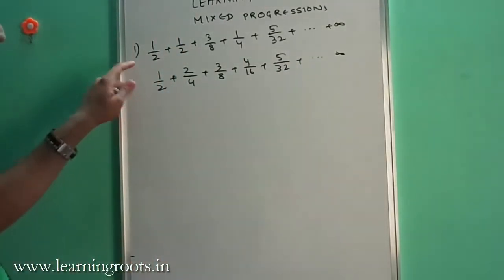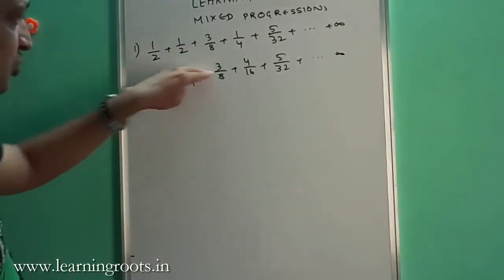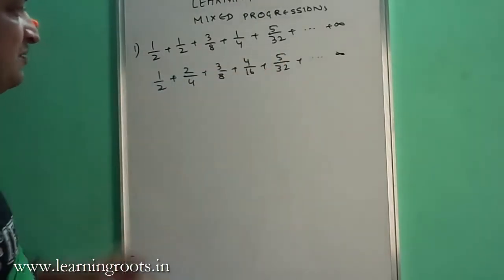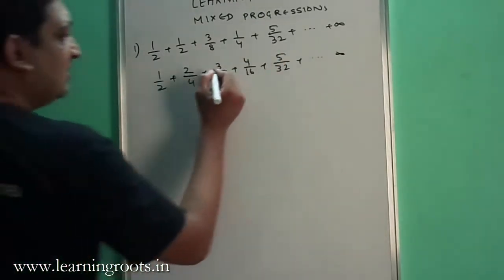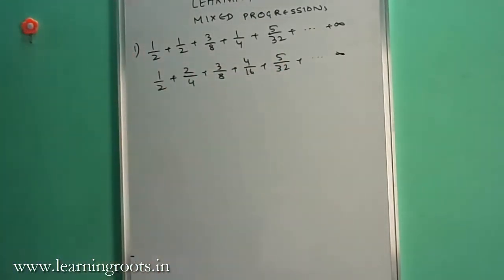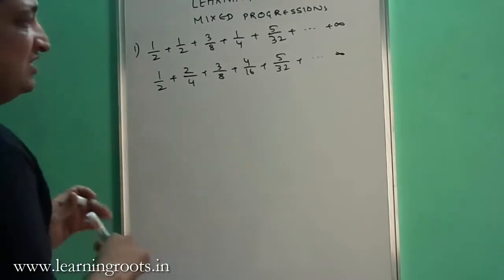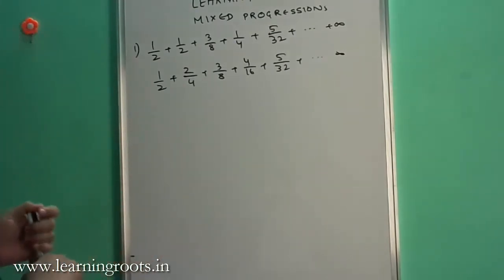What happens here is the numerators are in arithmetic progression while the denominators are in geometric progression, so it is a mixture of these two concepts. So how do we solve these kinds of questions?